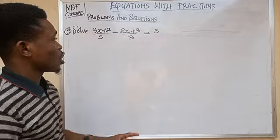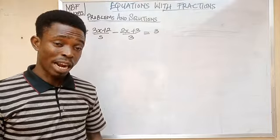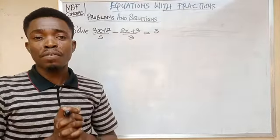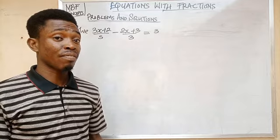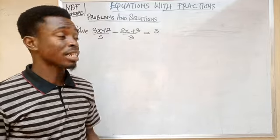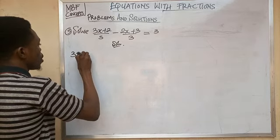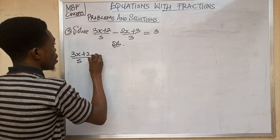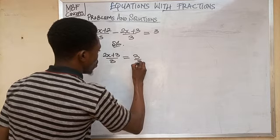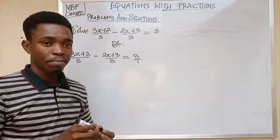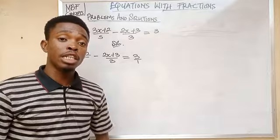We have a first fraction and a second fraction, but the 3 on the right is not a fraction. So we put it in fraction form by writing it as 3 over 1, making the denominator 1. Anything divided by 1 remains the same.